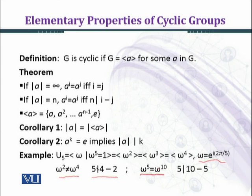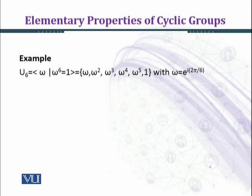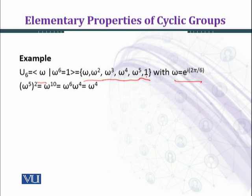We can also verify that omega^5 equals omega^10 and five divides ten minus five. Now we consider the example U6. U6 contains the sixth roots of unity, and U6 is generated by omega, where omega equals e^(i·2π/6). The elements are omega, omega^2, omega^3, omega^4, omega^5, and omega^6 equal to one.